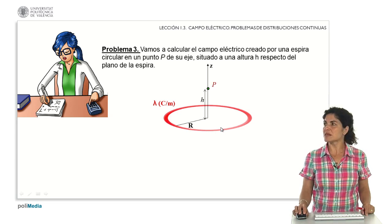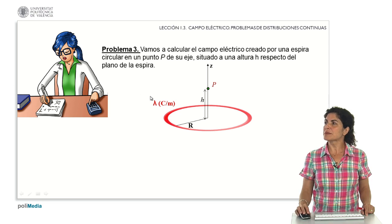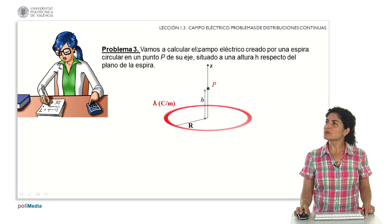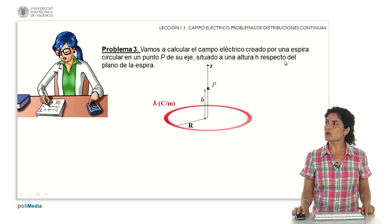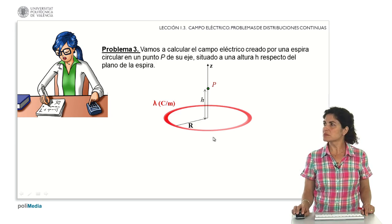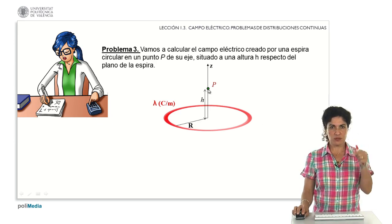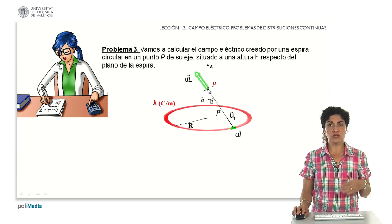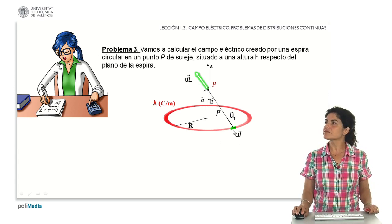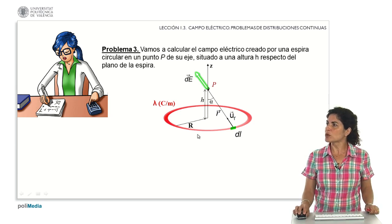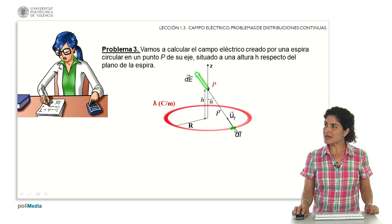The final example is that of a charged loop — a circular ring distribution with charge given by lambda per unit length, a longitudinal distribution. We calculate the electric field created by this circular loop at a point P on its axis at height h above the plane of the loop. We select charge differentials from length differentials; each charge differential is at a distance given by vector r from the study point, with direction given by unit vector u_r.